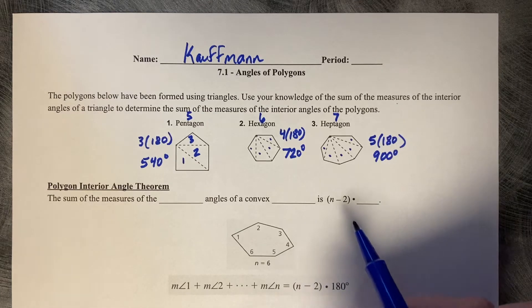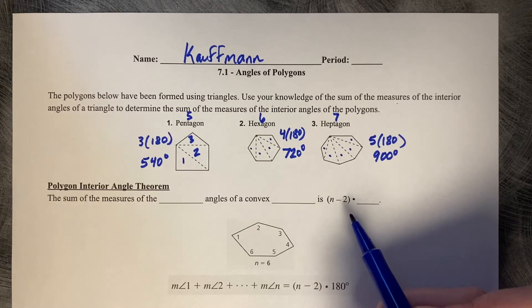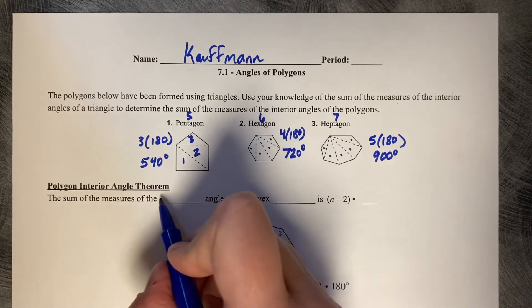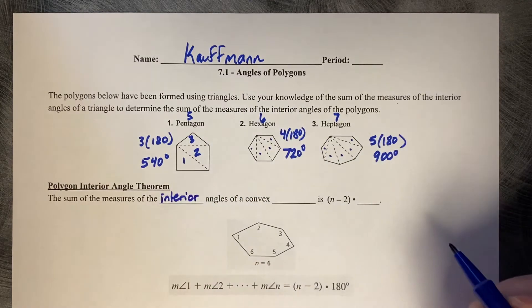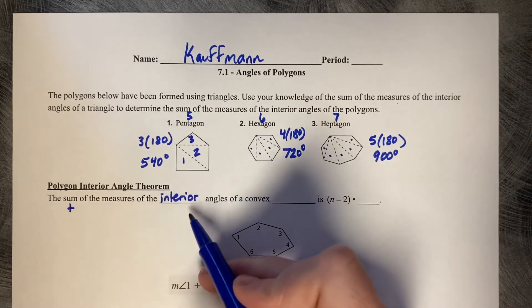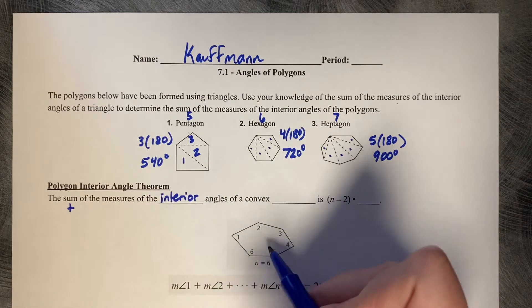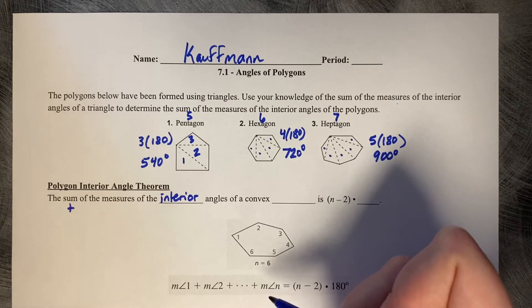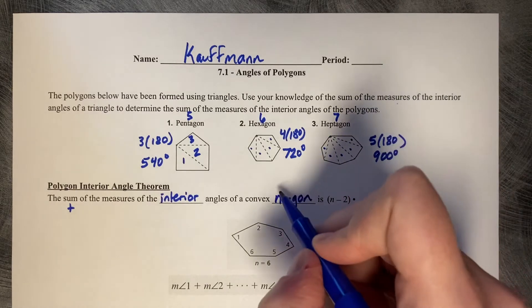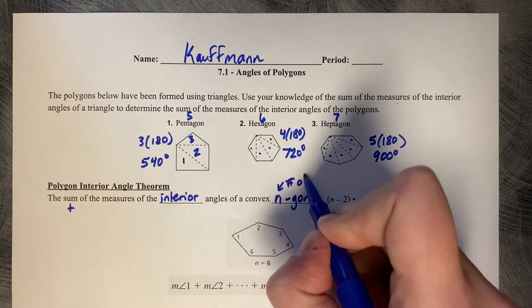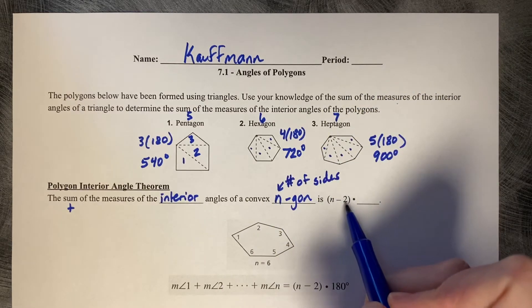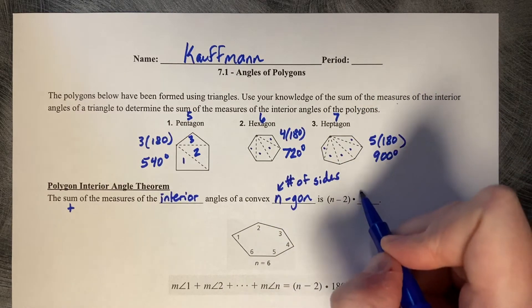So as you might know, or as you might guess, there is a pattern to this that we can use in all cases. The sum of the measures of the interior angles of a convex, meaning it points out on all of the vertices, of what we call an n-gon, n standing for the number of sides, is n minus two times 180.